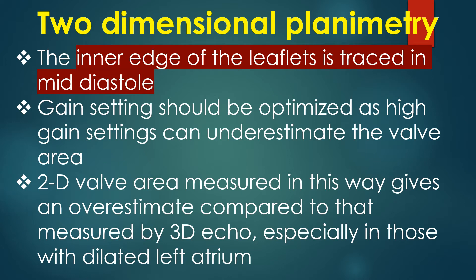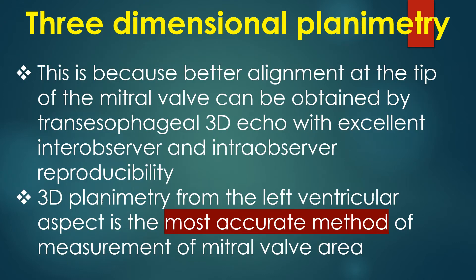Two-dimensional valve area measured in this way gives an overestimate compared to that measured by 3D echocardiography, especially in those with a dilated left atrium. This is because better alignment at the tip of the mitral valve can be obtained by transesophageal 3D echo, with excellent inter-observer and intra-observer reproducibility.